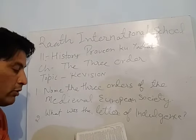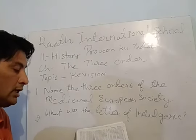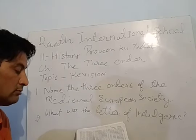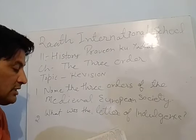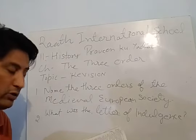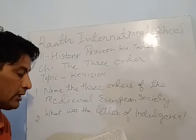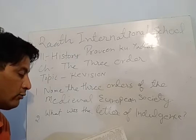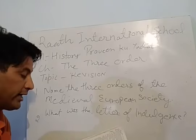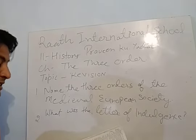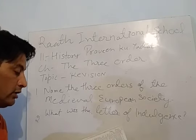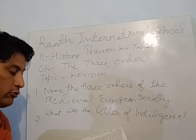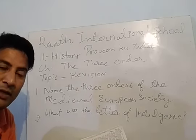How did the changing nature of the population affect the economy and society in Europe? Long-term change in population affected the economy. Towns became centers of trade and commerce. This change brought about new changes in agriculture. Production reached its peak, and good quality goods were produced, which increased the life expectancy of the people.